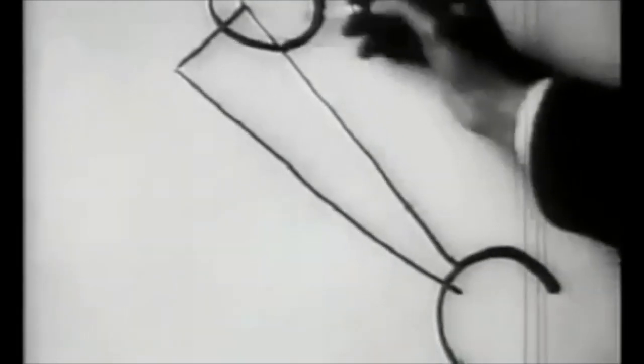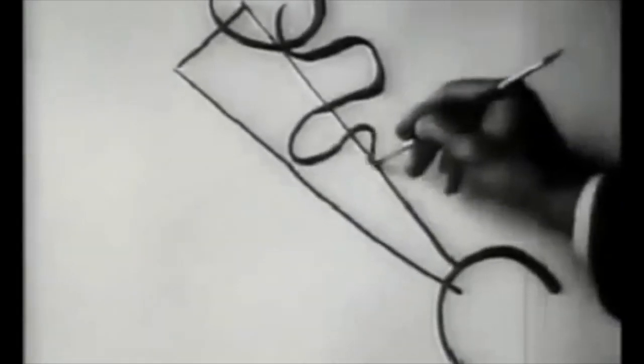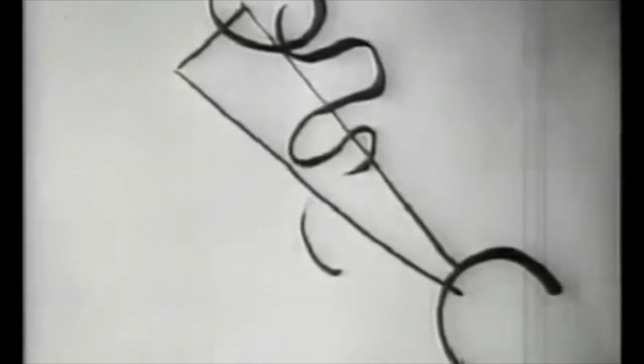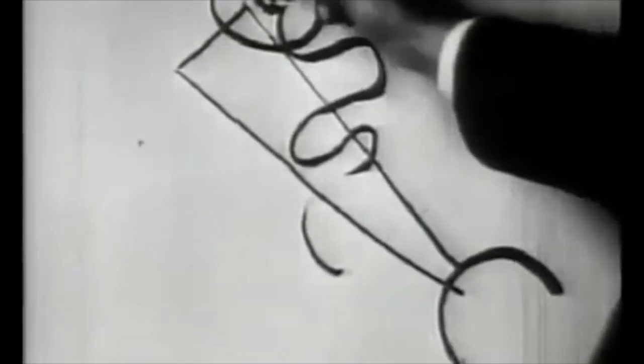He thought that the triangle could cause aggressive feelings, the square, calm feelings, and the circle, spiritual feelings. Many of his paintings used names as if they were songs or musical works, like composition and improvisation.